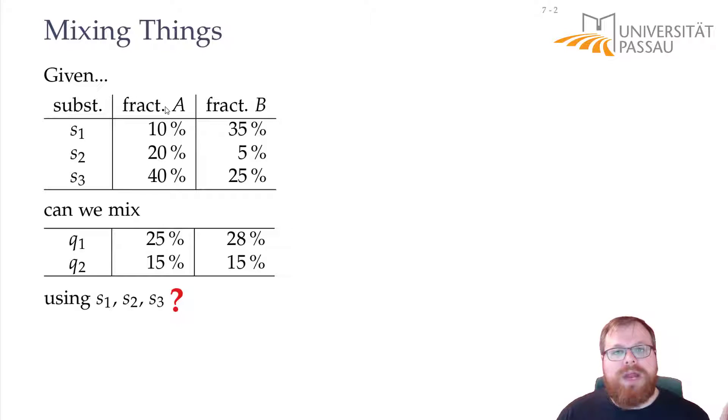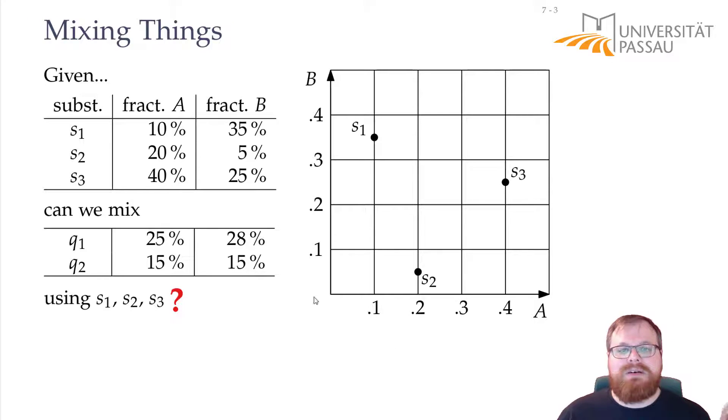So we have two fractions, two components, so we can just put them onto a coordinate system. We can have X axis A and Y axis B. Now each substance has a fraction of both components, so we can mark it as a point in this coordinate system. Substance S1 has a fraction of component A of 10%, so it is in this column, and a fraction of B of 35%, so it is in this row. So we have three points here, and each of these mixtures we want to get are also points in this coordinate system.